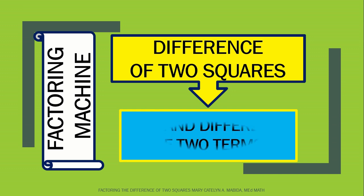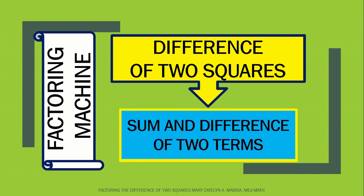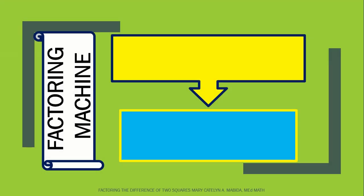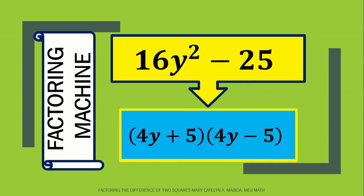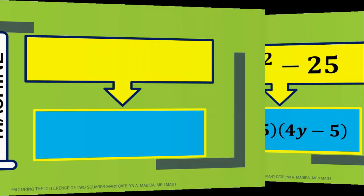Let's try the difference of two squares. And the factored form? Yes! It's the sum and difference of two terms. Now let us try out some numbers. 16y squared minus 25. The answer? You're correct! It's the sum and difference of 4y and 5.